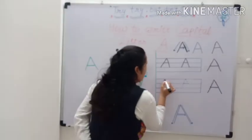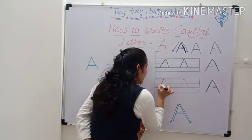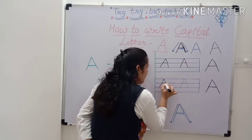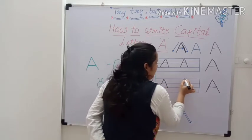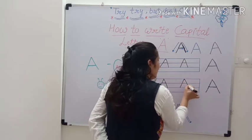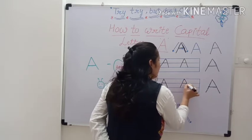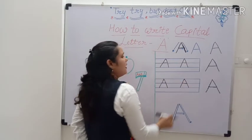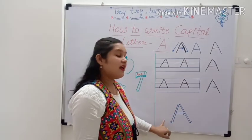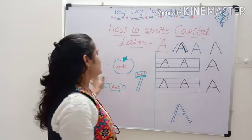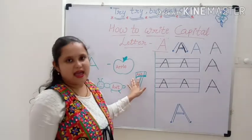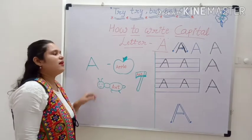Capital A. Again join the dots and make a letter A. Again join the dots and make a letter A. A. This is letter A. A is for apple. A is for axe. A is for ant.